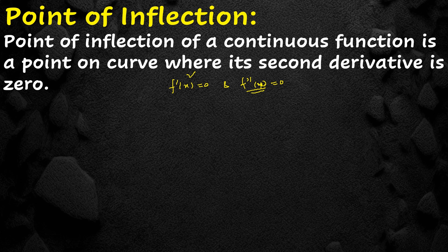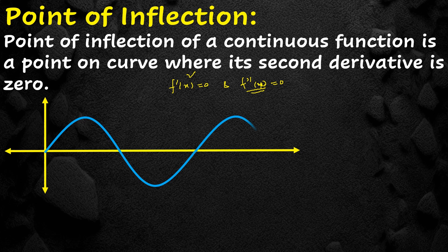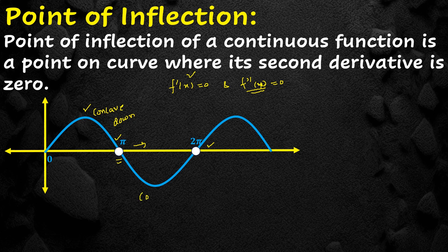Let's look at points of inflection from a different angle. Drawing a graph of the sine wave and labeling x-values, we pin out two points: π and 2π. At point π, looking to the left the curve is concave down, and to the right the curve is concave up. So at point π the concavity of the curve changes.